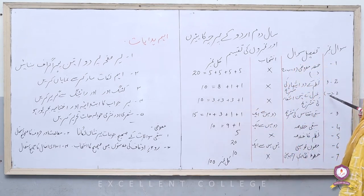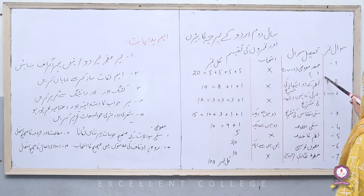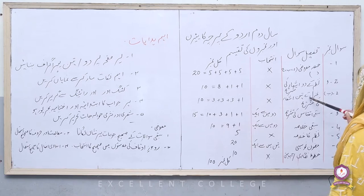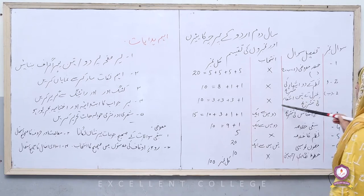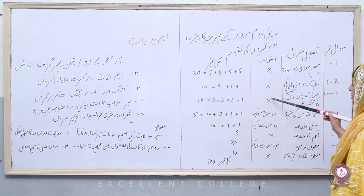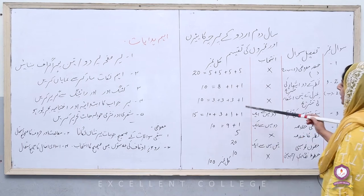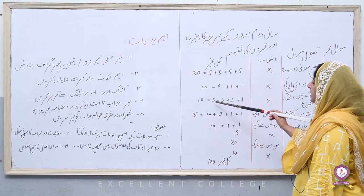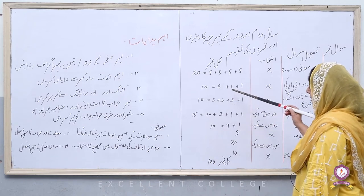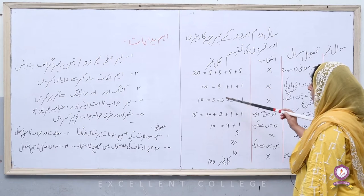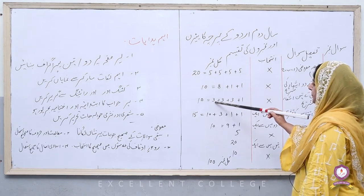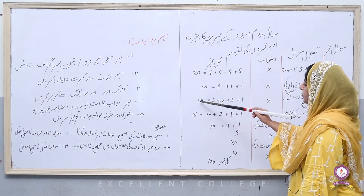سوال نمبر دو کا بے حصہ ہے غزل کے تین اشعار کی تشریح۔ اس میں بھی کوئی چائس نہیں، جو اشعار دیے جائیں گے وہی کرنے ہوں گے۔ ایک نمبر غزل کے شاعر کے نام کا، اور تین تین نمبر کے تین اشعار — ایک ہی غزل کے۔ تینوں کی نمبروں کی تقسیم تین، تین، تین ہے اور ٹوٹل دس نمبر۔